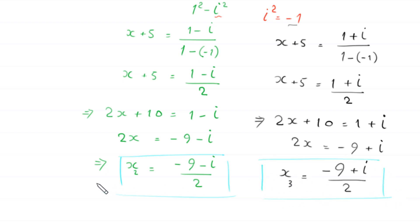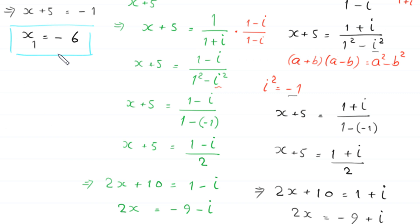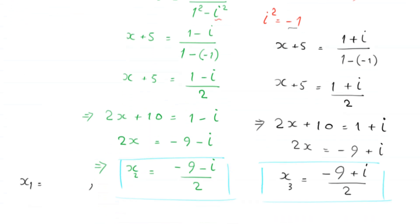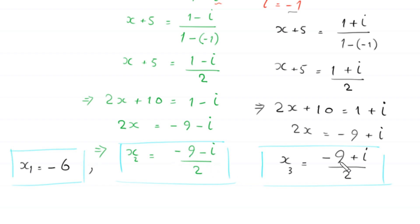The first value of x is equal to −6. So we have three solutions of this equation: x = −6, x = (−9 − i) / 2, and x = (−9 + i) / 2.